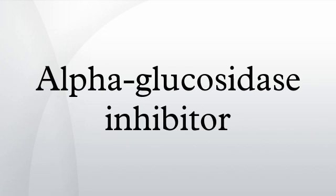Since alpha-glucosidase inhibitors prevent the degradation of complex carbohydrates into glucose, the carbohydrates will remain in the intestine. In the colon, bacteria will digest the complex carbohydrates, thereby causing gastrointestinal side effects such as flatulence and diarrhea. Since these effects are dose-related, it is generally advised to start with a low dose and gradually increase to the desired amount.